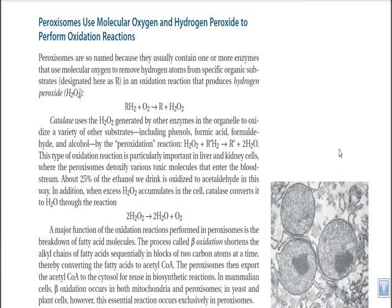Let us talk about peroxisomes. What are peroxisomes? Peroxisomes are the extension of endoplasmic reticulum — a vesicle-like, sac-like structure containing one or several enzymes destined to remove hydrogen atoms from specific organic substances, because those hydrogen atoms can produce hydrogen peroxide inside the cell, and hydrogen peroxide is a bleaching agent — a bad agent for a cell to live on.